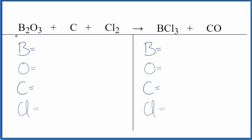Let's balance the equation for B2O3 plus C plus Cl2. We have diboron trioxide, sometimes just called boron trioxide, carbon, and then chlorine gas.